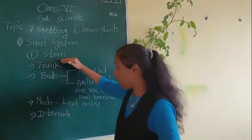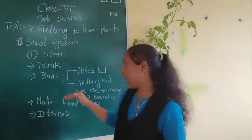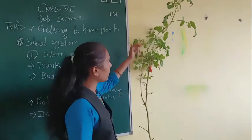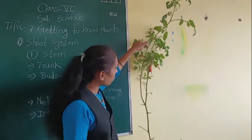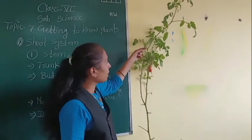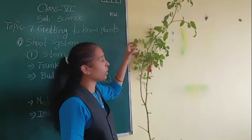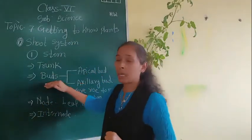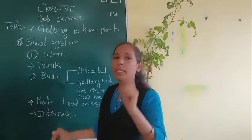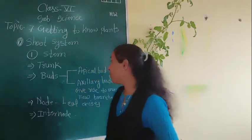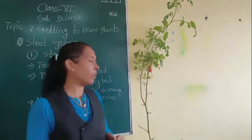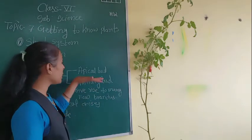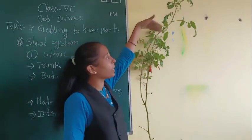On the stem there are small outgrowths present, and those small outgrowths are called buds. So many outgrowths are present on the plant, and those outgrowths are called buds. There are two types of buds present on the stem: the apical bud and the axillary bud. The apical bud is responsible for the vertical growth of the plant.